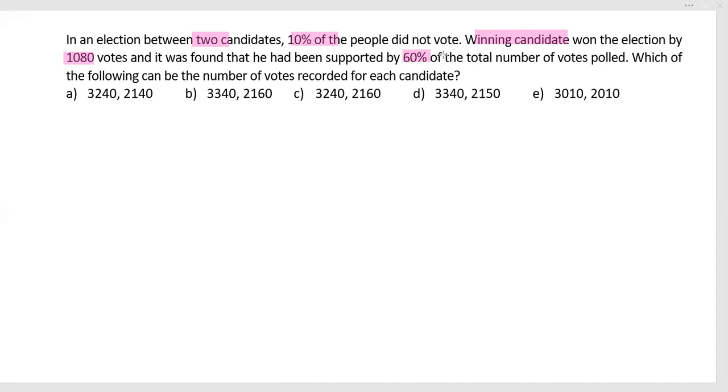So out of votes polled, 60% went to the winner, so definitely 40% went to the loser, and the difference between the two is 1080. Which of the following can be the number of votes recorded for each candidate?